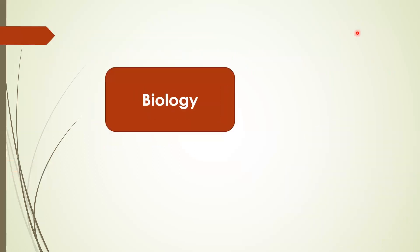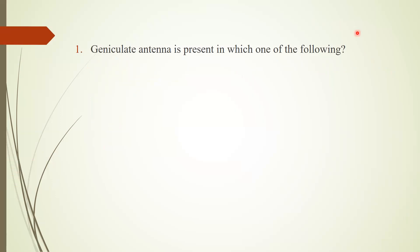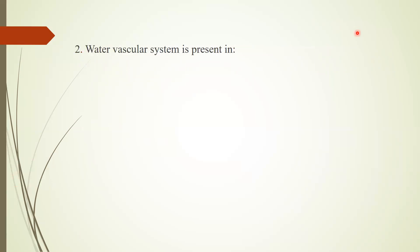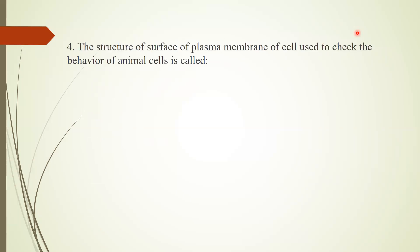We will first discuss the biology portion. Question 1: Janiculate and Tina is present in which of the following? Answer: ants. Question 2: Water vascular system is present in echinoderms. Question 3: Which of the following is a free-living flatworm? Answer: Planaria. Question 4: The structure on the surface of the plasma membrane of a cell used to check the behavior of animal cells is called glycolipid.